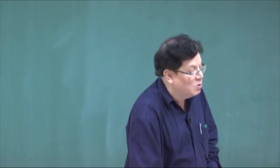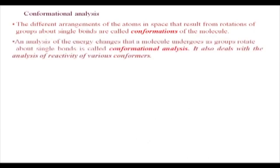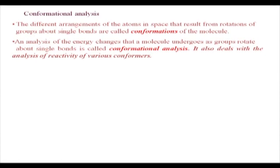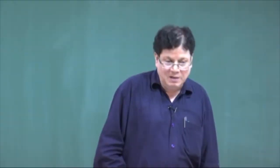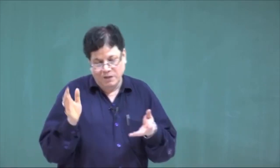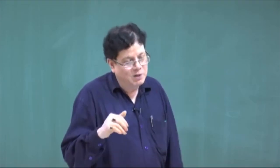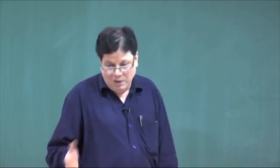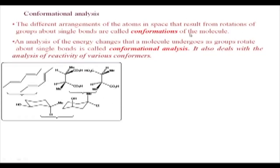Last time I told you about the conformations of ethane and started that concept, but let us have a repeat. The different arrangements of atoms in space that result from rotations of groups about a single bond are called conformations of the molecule. A caution: these single bonds cannot be between monovalent atoms — they should be between atoms which are at least divalent, like in hydrogen peroxide. Hydrogen peroxide also has different conformations, as oxygen is a divalent atom. Some conformations may be more stable than others — we will discuss that.